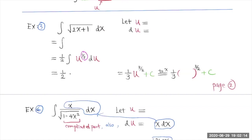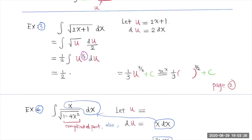Now take a look at this example. We want to let u be the inner function, 2x + 1. If this is a single variable, it will simplify things. So let u = 2x + 1, then du = 2 dx — the derivative of 2x with respect to x is 2. This integral becomes the square root of u, and dx is expressed as du over 2.